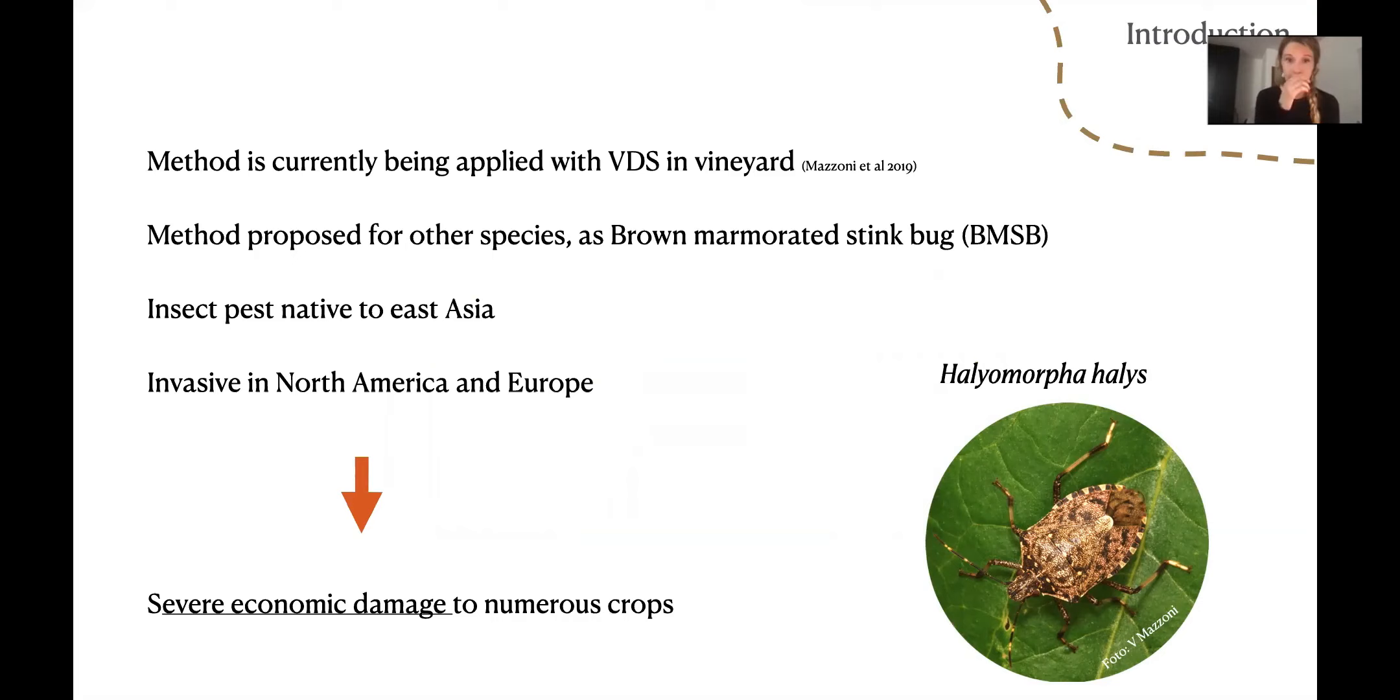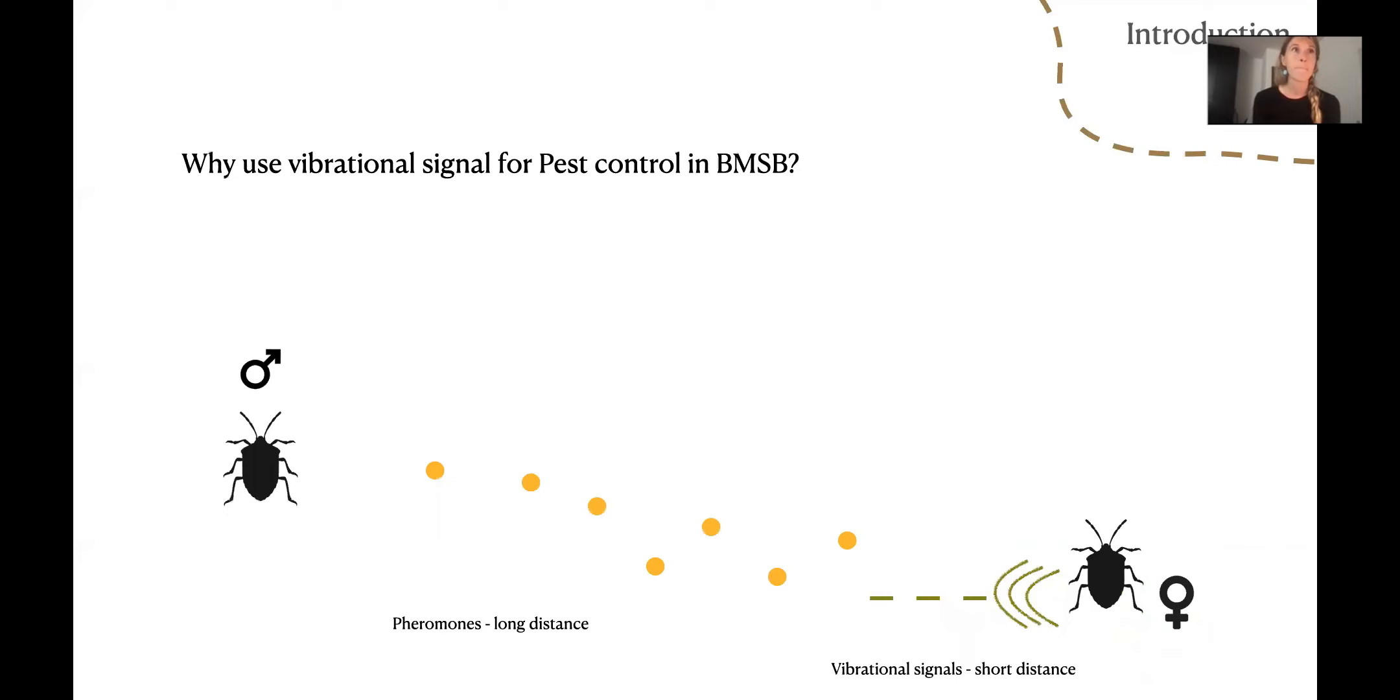This method is currently being applied with vibrational disturbance signals in vineyards here in Italy. For other species its use has been proposed, as is the case of the brown marmorated stink bug, Halyomorpha halys. This insect is native from East Asia and is invasive in North America and Europe, causing severe economical damage to numerous crops, and therefore is of extreme interest for pest control.